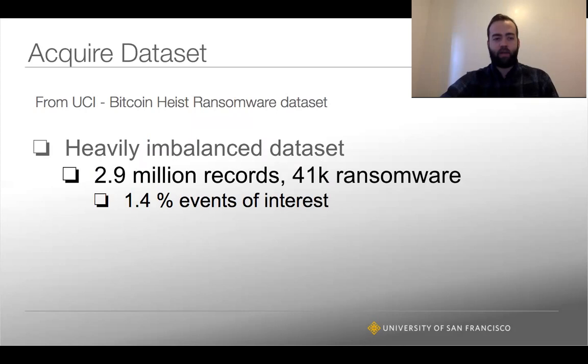To do this, we need to acquire some data. This dataset is brought to me by UCI - they host a Bitcoin Heist ransomware dataset. It's from the full Bitcoin graph from 2009 up until 2018, with transactions lower than 0.3 bitcoins filtered out.